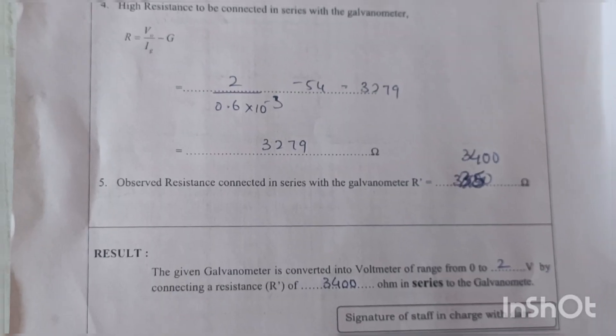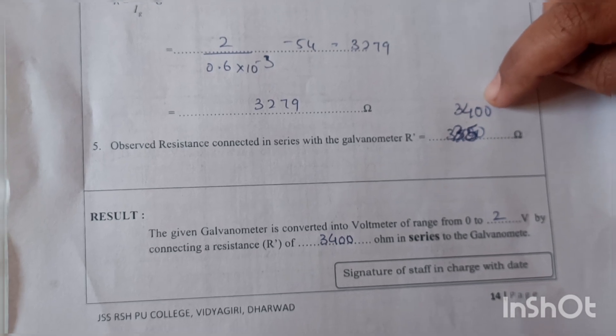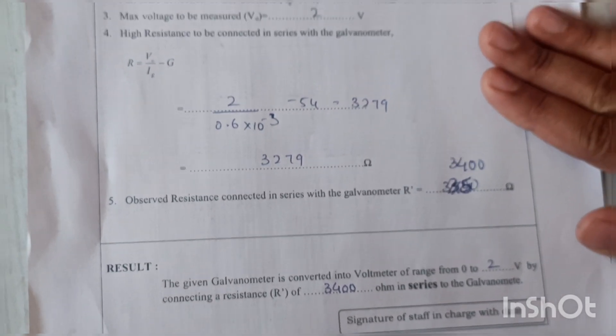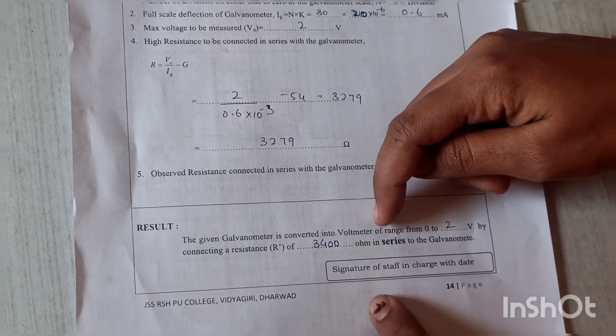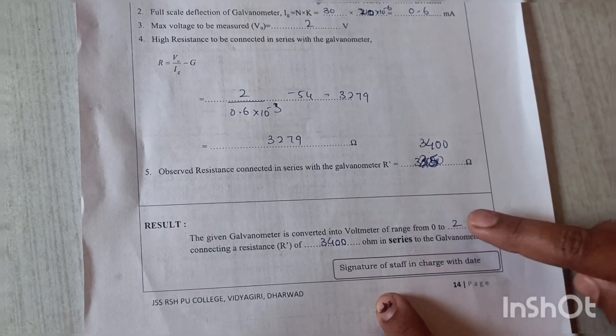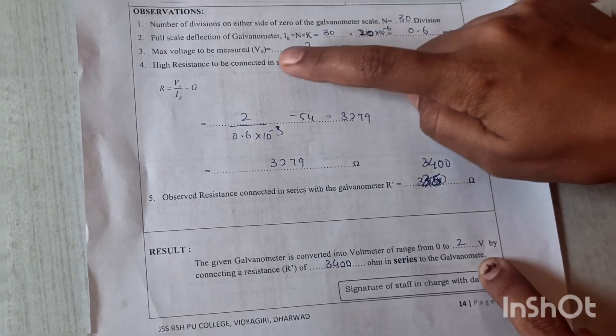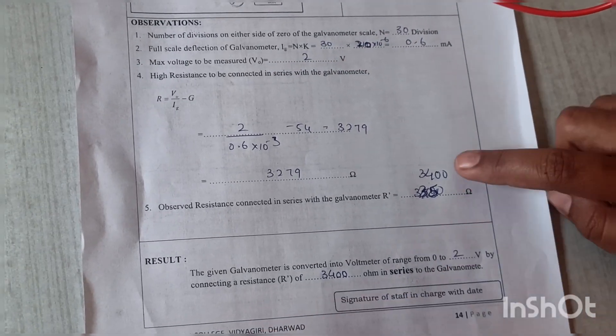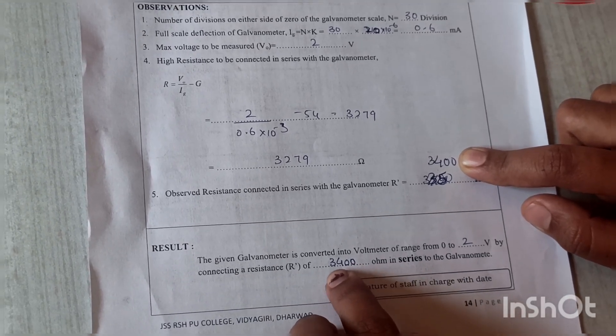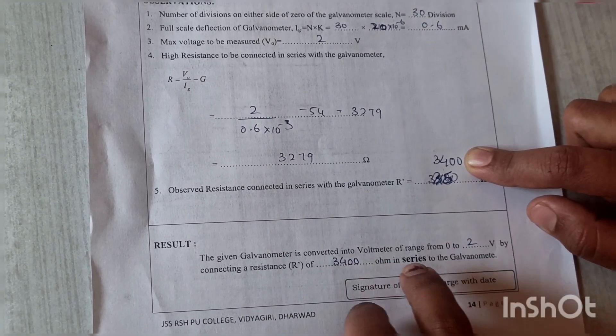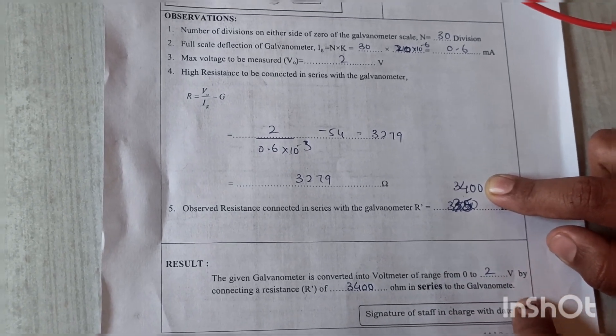Note down that removed resistance value as 3400 here. With the completion of the experiment, write down the result value. Galvanometer to voltmeter range from 0 to 2 volt. This 2 volt is from the observation for the V0 value. Then removed practical resistance value is mentioned here. By connecting the 3400 ohms in series with the galvanometer, galvanometer is converted to the voltmeter.